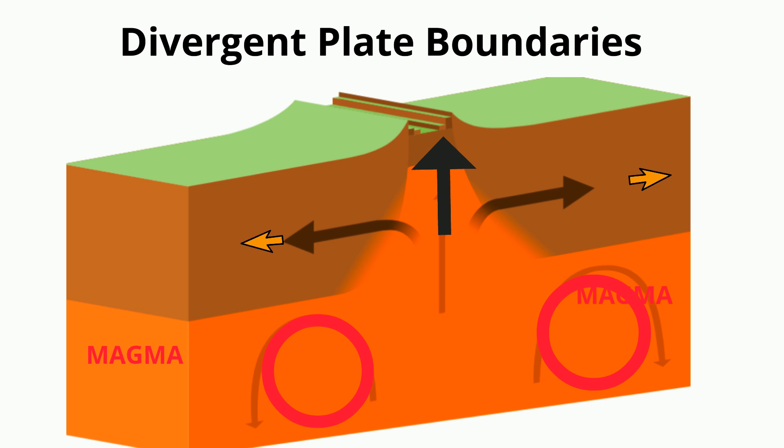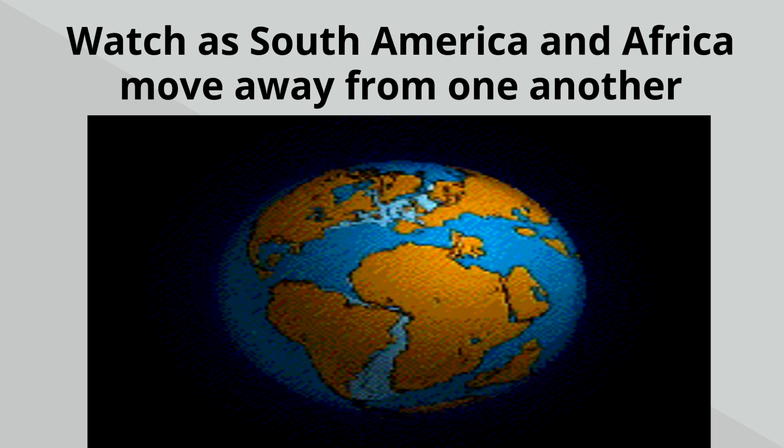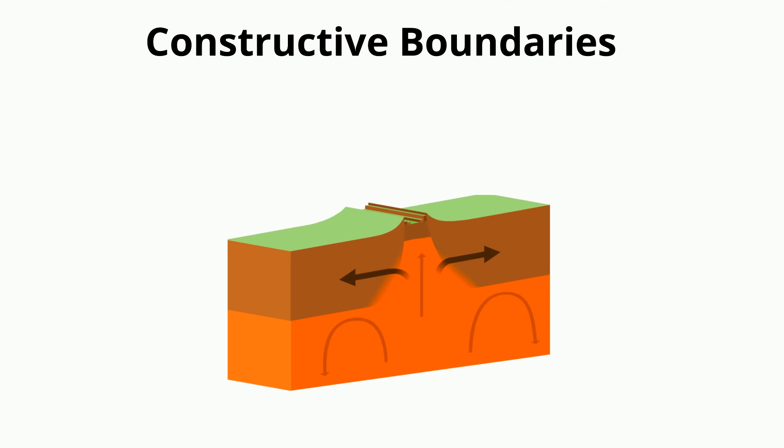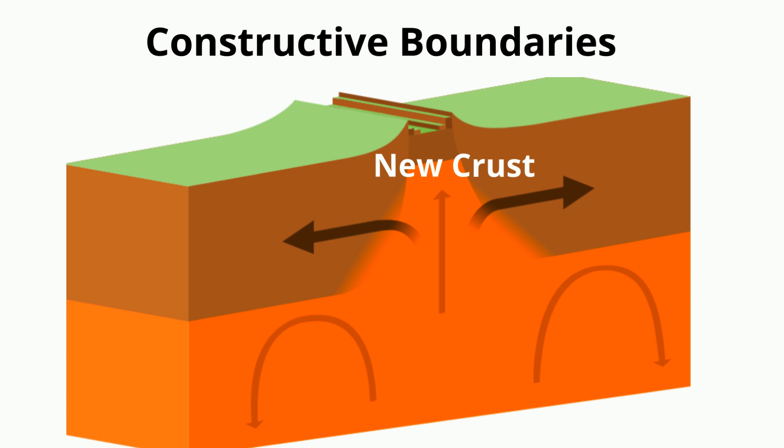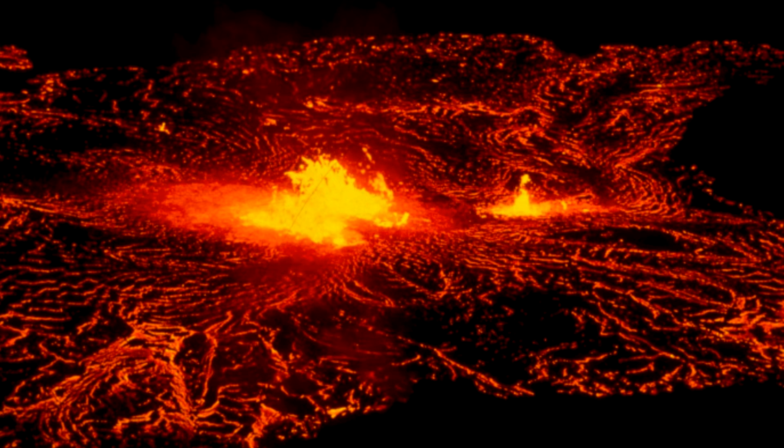At the plate boundary, the two plates move in opposite directions. Divergent boundaries are constructive boundaries because new crust is formed. As the plates move apart, molten magma fills in the gap and creates new crust.